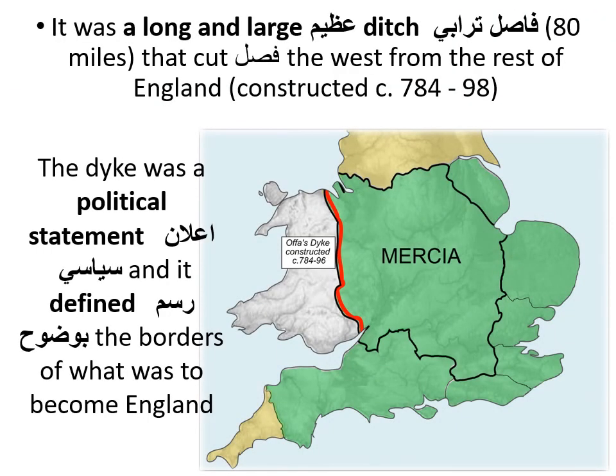King Offa of Mercia was one of the most powerful Anglo-Saxon kings. He united with other kingdoms and built a huge dike — 80 miles long — to separate his kingdom from the invading and troublesome tribes of Wales. The dike was a political statement: it defined the borders of what was to become England, cutting Wales off from the rest of England.